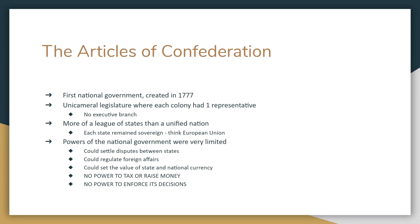Before the Constitution, we had something called the Articles of Confederation — our first national government. It came into being in 1777 when the Second Continental Congress created it. There was one house in the legislature, a unicameral legislature — 13 colonies, 13 representatives, one from each colony. No executive branch at all, no president. In reality, this was more like a League of States than a unified country. Each state would have been independent, but they would join together like collective bargaining when needed.